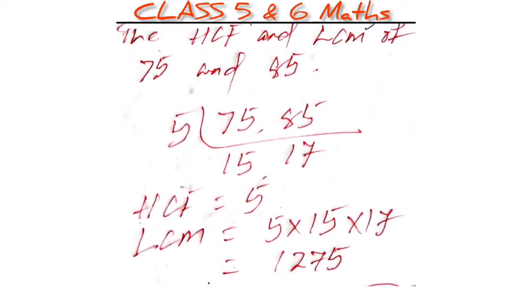Welcome all of you from Video Teaching Channel. Today we will discuss mathematics for Class 5 and 6 students about highest common factor and lowest common multiples. Find the HCF and LCM of 75 and 85.